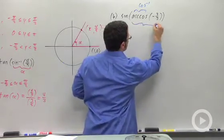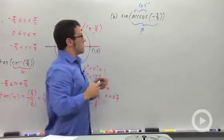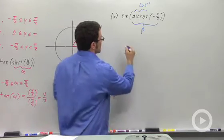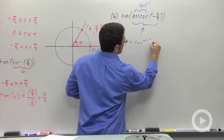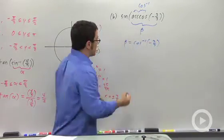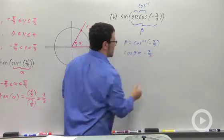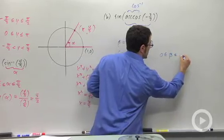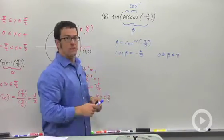So sine of arc cosine of negative 2 thirds. This is going to be another angle. Let me call it beta. And I should plot beta in a second. But first, let's figure out what kind of an angle beta is. Remember that beta equals inverse cosine of negative 2 thirds means the cosine of beta equals negative 2 thirds. And beta is between 0 and pi. Remember that that's going to be the range of inverse cosine.